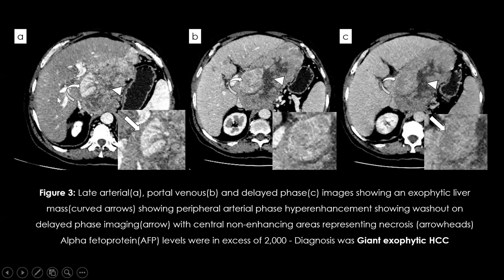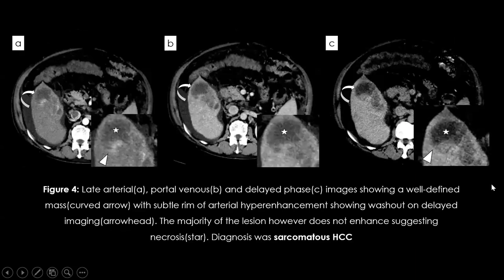The second case shows an exophytic lesion arising from the liver — large, with short peripheral arterial phase hyper-enhancement relative to liver parenchyma and washout on delayed phases. There is a large centrally non-enhancing necrotic area within. Differentiation from a hemangioma is based on the absence of peripheral nodular enhancement in this case.